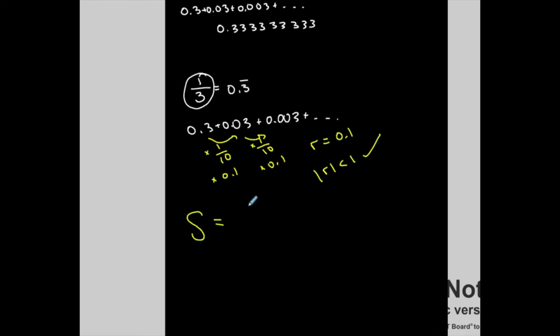Well, what is A1? A1 is the first term. So 0.3 divided by 1 minus 0.1. Let's see what I get. Plug it all into my calculator.